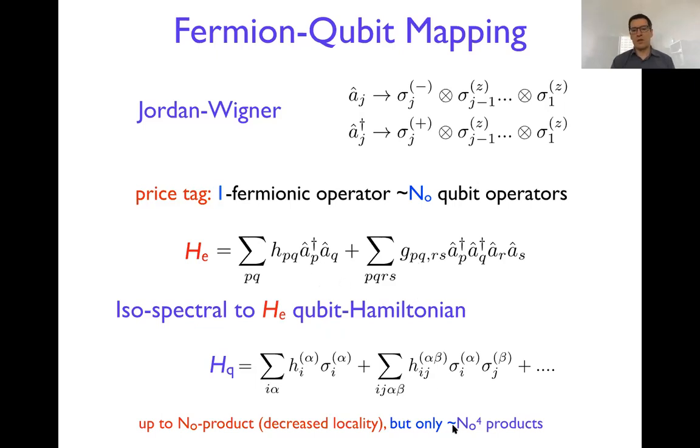And the total number of combinations is still polynomial because we start with a polynomial number of products in the electronic Hamiltonian. It's just n to the fourth, comes simply because p, q, and r, s they can run over n orbitals or spin orbitals. And therefore this Jordan-Wigner recipe introduces a constant number of terms for each product, and therefore we just have a relatively similar polynomial bound on the number of products in the qubit Hamiltonian. So it doesn't really blow up exponentially, it stays polynomial.